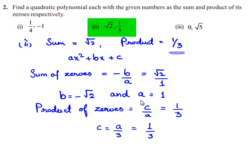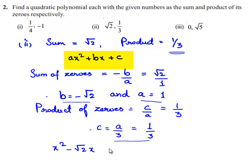Finally, we got A is equal to 1, B is equal to minus root 2, and C is equal to 1 by 3. Substituting the values of A, B, and C in the polynomial Ax square plus Bx plus C, we will be getting x square minus root 2 times x plus 1 by 3. So the required polynomial is x square minus root 2 times of x plus 1 by 3.